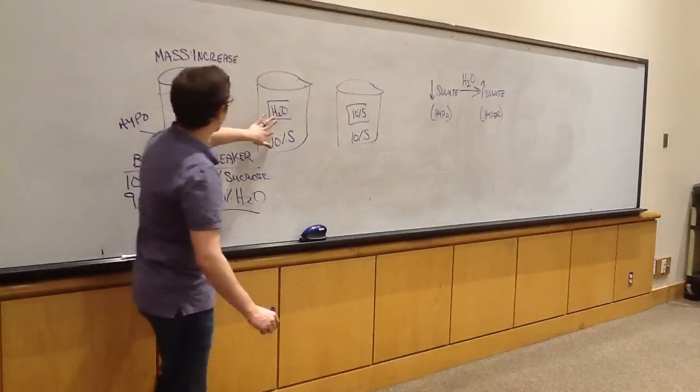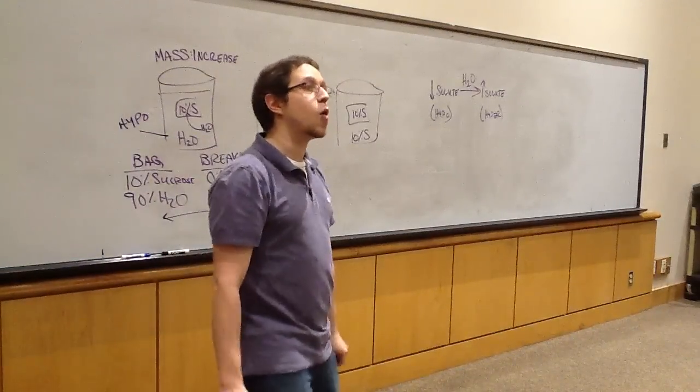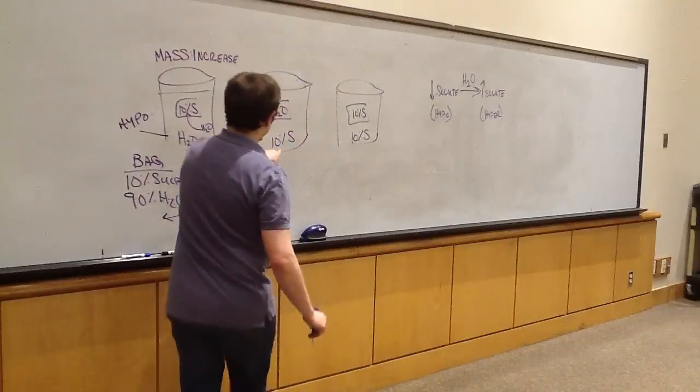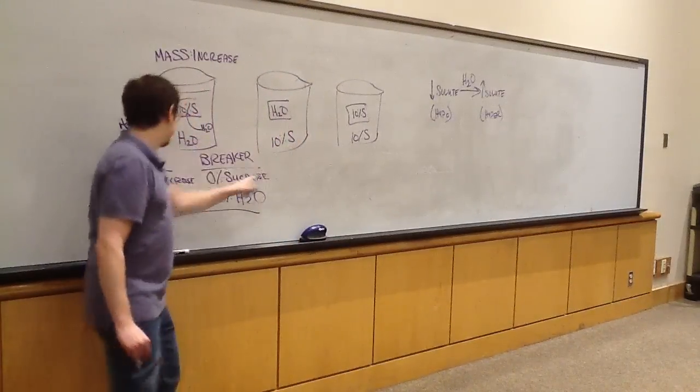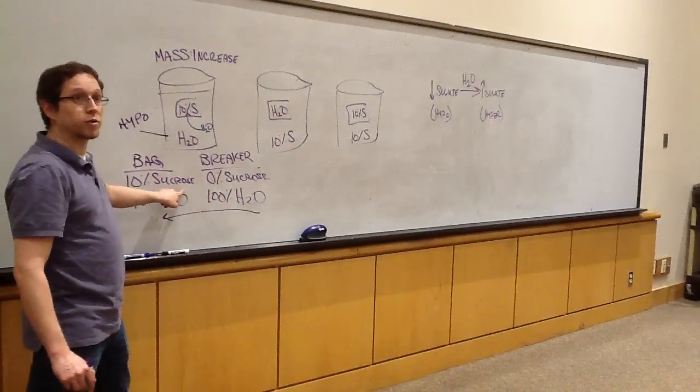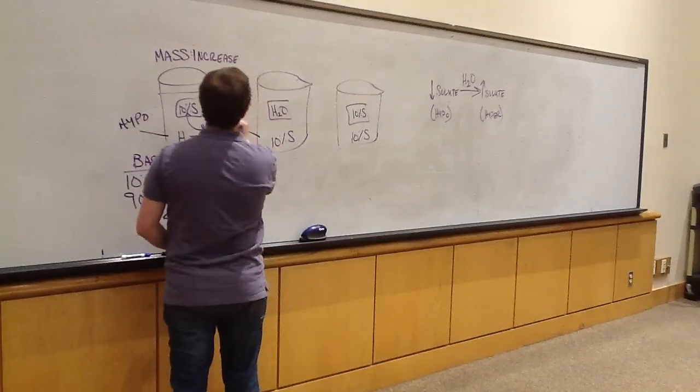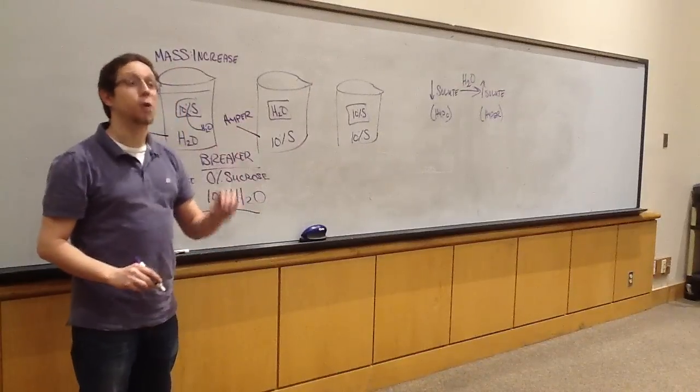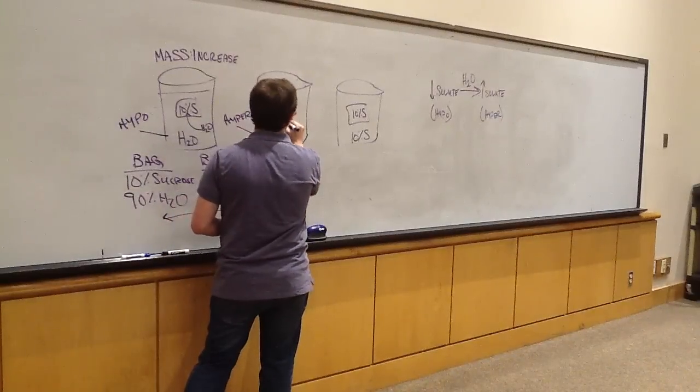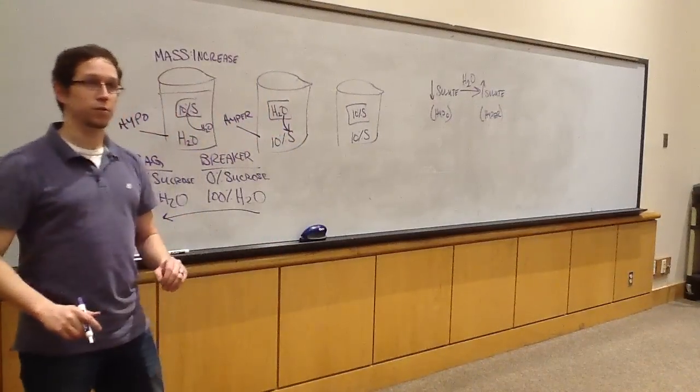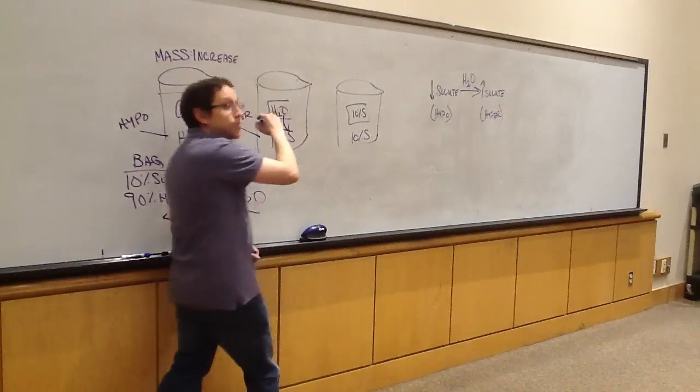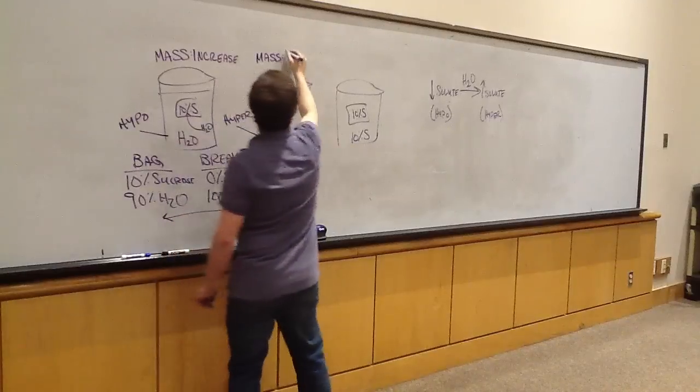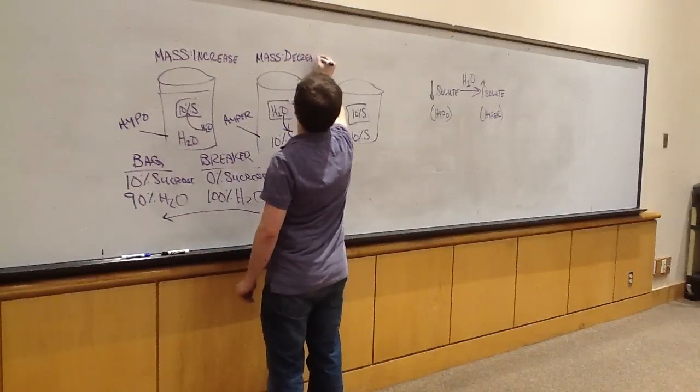In the second example, we flip the solution in the bag and the beaker. So now where is my hypertonic solution? It's in the beaker. Hyper, remember, is solute. We're looking at sucrose. So this solution is now hypertonic. What is the tonicity of the solution in the bag? Hypotonic. Water always moves away from the hypotonic into the hypertonic solution. So it's moving out of the bag. What am I going to see happen to the mass of the bag? It's going to decrease.